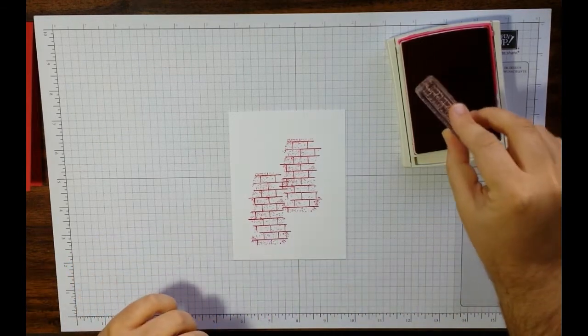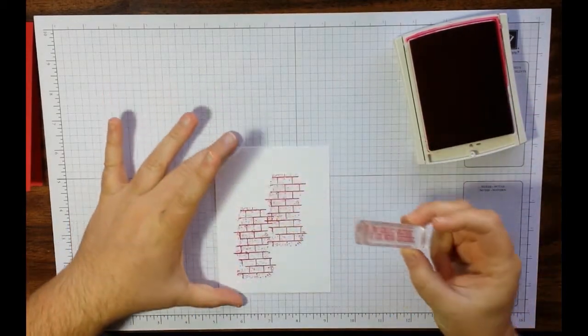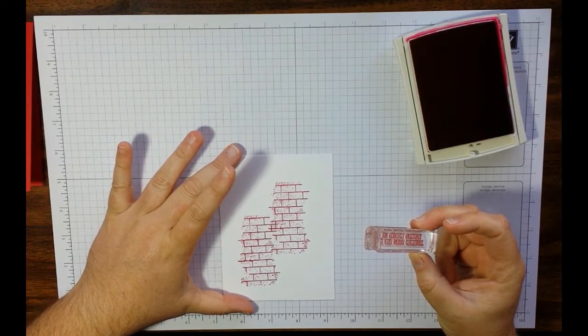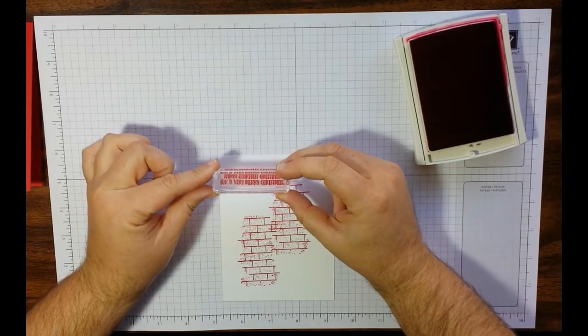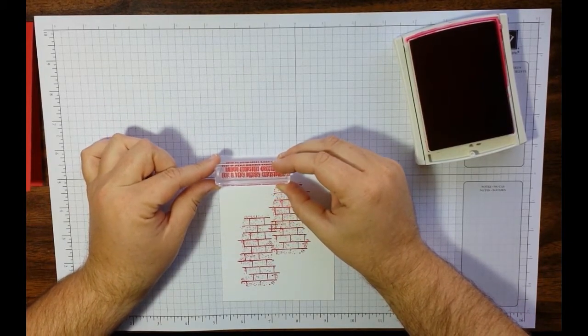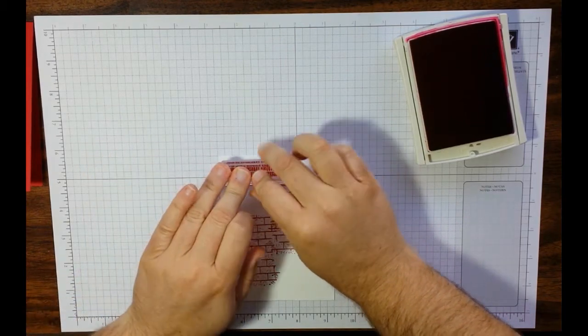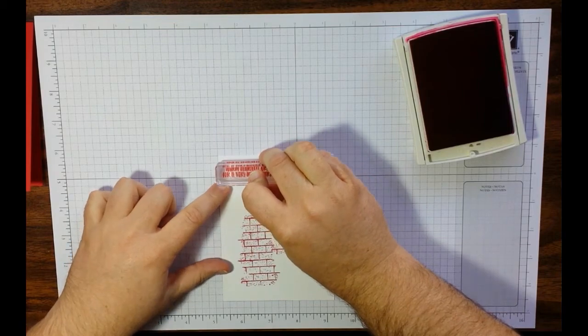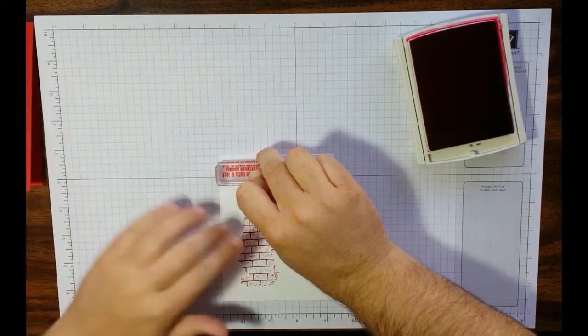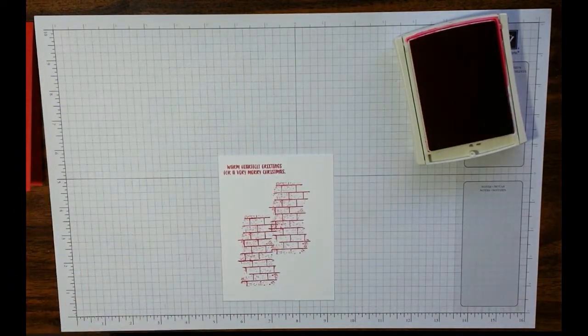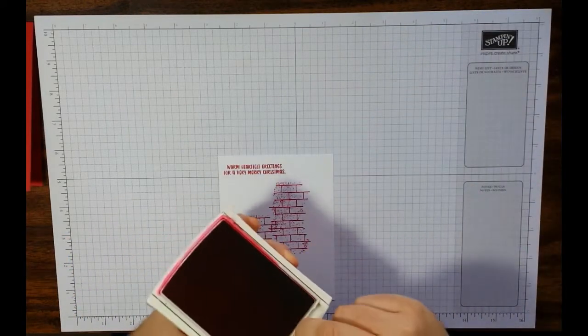I already mounted up our Warm Heartful Christmas Greetings here. And we're going to stamp that up here in the corner. And I'm going to use my grid paper to line it up. If you're using photopolymer and you're not always liking the way that they stamp, go ahead and slide your paper piercing mat underneath it. Oh, beautiful. So, we have all of that done.